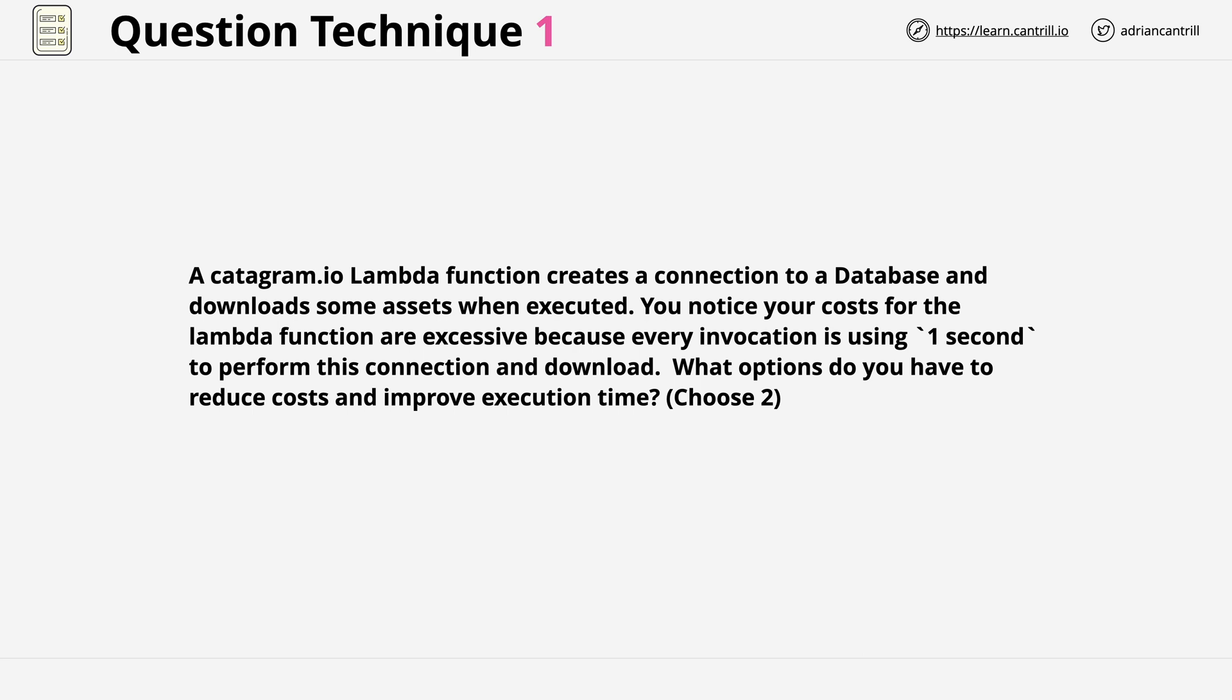If you're using the question first approach, then step number one is to quickly read the question and then perform keyword identification. You're looking for those words which you think matter and those which don't. Every question has a different structure, and so part of this process comes with practice. What we're looking for are the parts of the question which materially impact which answers we're going to select. Why don't you go ahead and pause the video and see which keywords you can identify in this question, and once you're finished, unpause the video and we can compare.